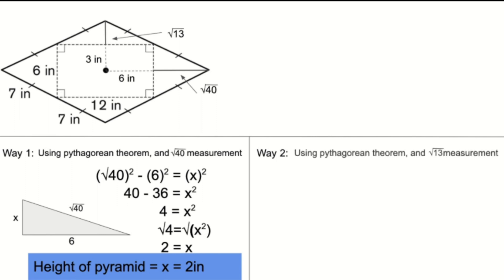The second way we can find the height of this pyramid is using the Pythagorean theorem again, but this time using the root of 13 measurement. We can insert the root of 13 measurement into the equation. In the equation, x represents the height of the pyramid again, but the 3 represents the shorter dimension of the midpoint.